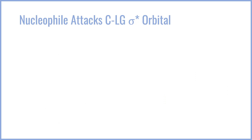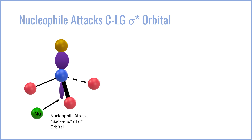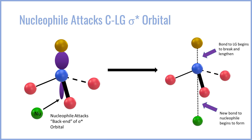On an orbital level, the nucleophile attacks the anti-bonding orbital associated with the carbon-leaving group bond. The tetrahedral carbon has the leaving group in gold, and that C–LG bond has a purple orbital representing the anti-bonding orbital — the lowest unoccupied molecular orbital. It's empty and higher in energy. The nucleophile attacks the tail of the anti-bonding orbital and pushes its lone pair electrons into that orbital, filling it and disrupting the bonding between the carbon and the leaving group. As a result, the leaving group–carbon bond starts to break and lengthen.